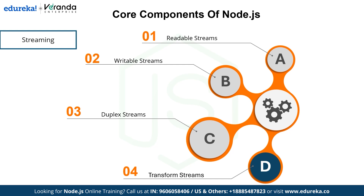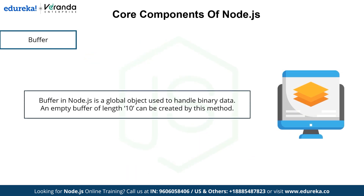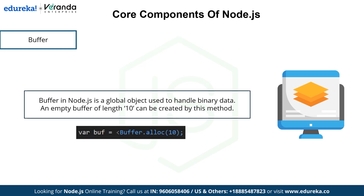The next component is buffer. Buffer in Node.js is used to handle binary data directly, making it essential for working with streams or files. You can create an empty buffer of a specific size — for example, Buffer.alloc(10) creates a buffer of length 10.